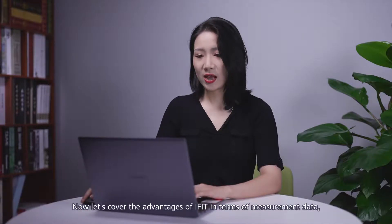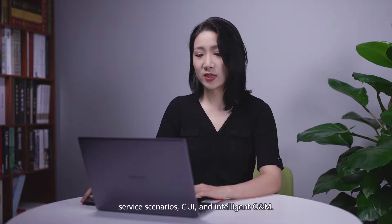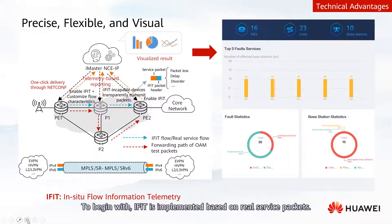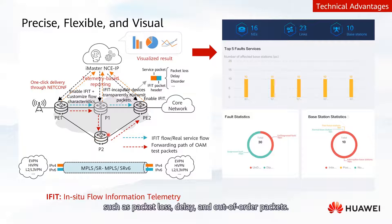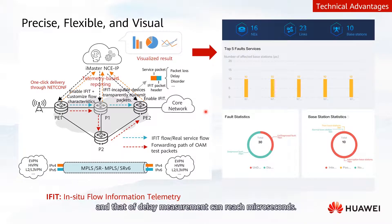Now let's cover the advantages of iFIT in terms of measurement data, service scenarios, GUI, and intelligent O&M. iFIT is implemented based on real service packets. It can restore the actual forwarding path of packets and accurately measure performance indicators for each service from multiple dimensions such as packet loss, delay, and out-of-order packets. The precision of packet loss measurement can reach 10 to the negative 6, and that of delay measurement can reach microseconds.